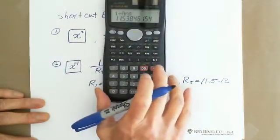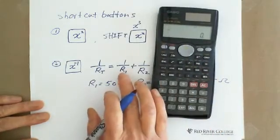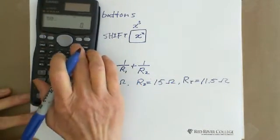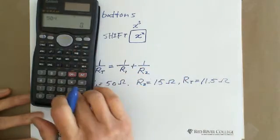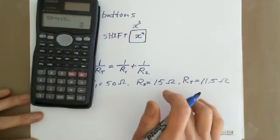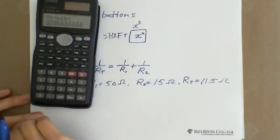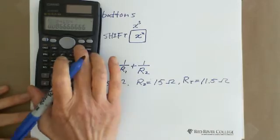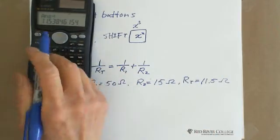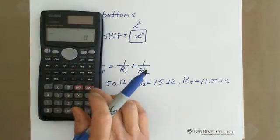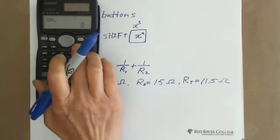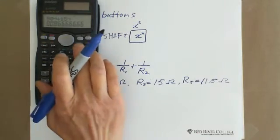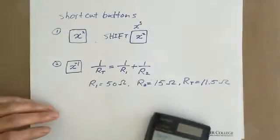But if you use the X⁻¹ button, it's much easier. You just enter 50, hit the reciprocal button, plus 15, hit the reciprocal button, then equals, then hit reciprocal one more time — and you get 11.5 ohms. Very convenient. So: 50 → reciprocal → + → 15 → reciprocal → = → reciprocal → 11.5.